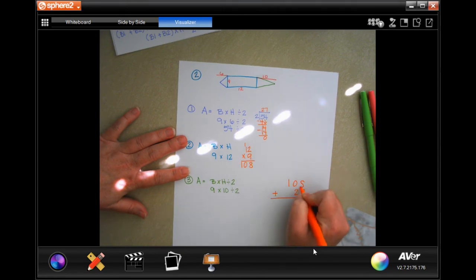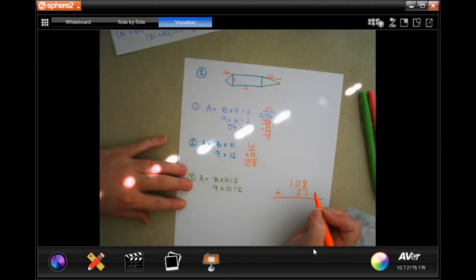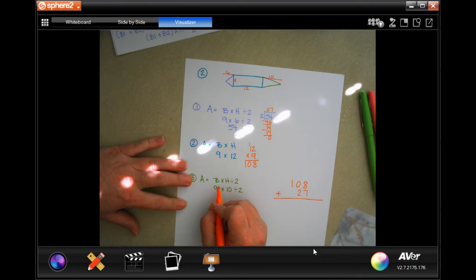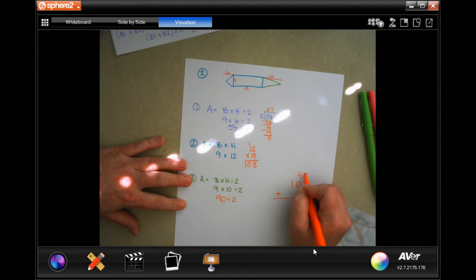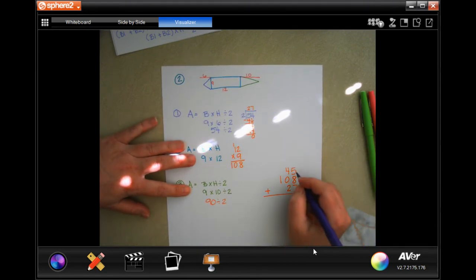The next one is that last triangle, it is 9 by 10, then we have to divide that by 2. Well, 9 times 10 is 90 and when I divide that by 2 I get 45.